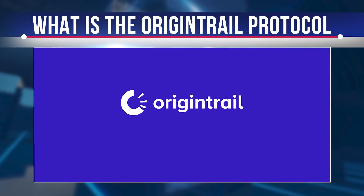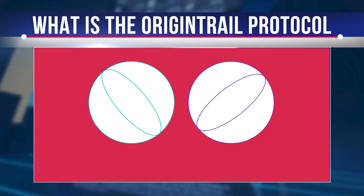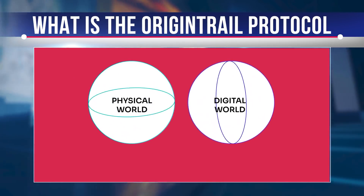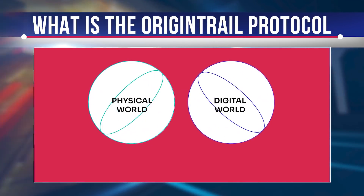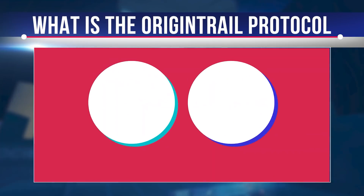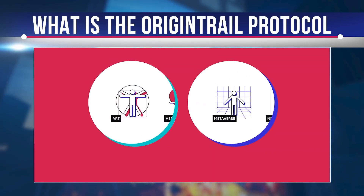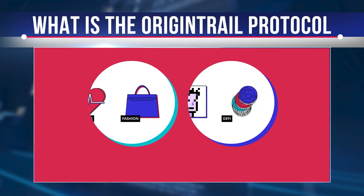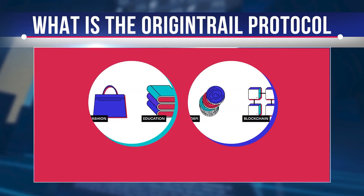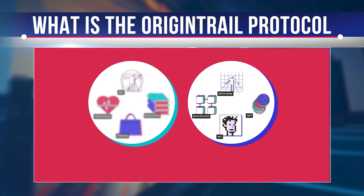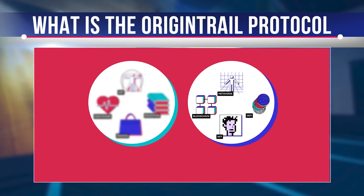OriginTrail provides data exchange for supply chains in a neutral, decentralized, open-source protocol. The network consists of nodes and an off-chain technology stack that has been designed to allow blockchain to interoperate with legacy software systems and other blockchains. With OriginTrail, companies can enjoy reliable data exchange and improve the interoperability of their legacy systems.